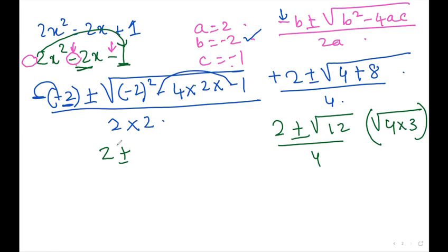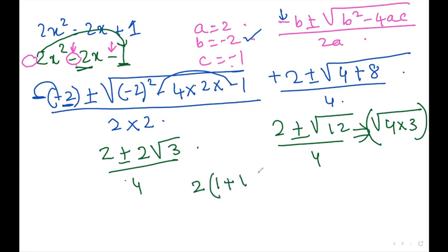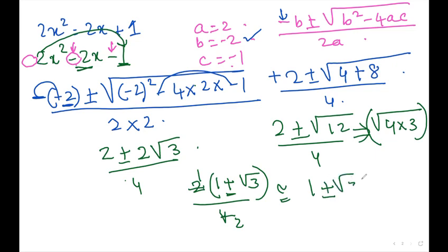Now, root of 12 equals root of 4 times 3, so root of 4 is 2 and root of 3 stays as root 3. So I have 2 plus or minus 2 root 3, over 4. Taking the common factor of 2 in the numerator: 2 times the quantity 1 plus or minus root 3, over 4. The 2s cancel, giving the answer: 1 plus or minus root 3 over 2.